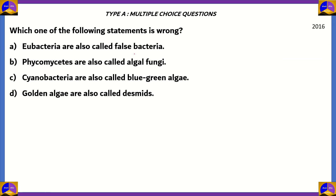Let's look at the next question: 'Which one of the following statements is wrong?' A) Eubacteria are also called false bacteria. B) Phycomycetes are also called algal fungi. C) Cyanobacteria are also called blue-green algae. D) Golden algae are also called diatoms. Remember, we have to find the wrong statement — that would be our correct option.